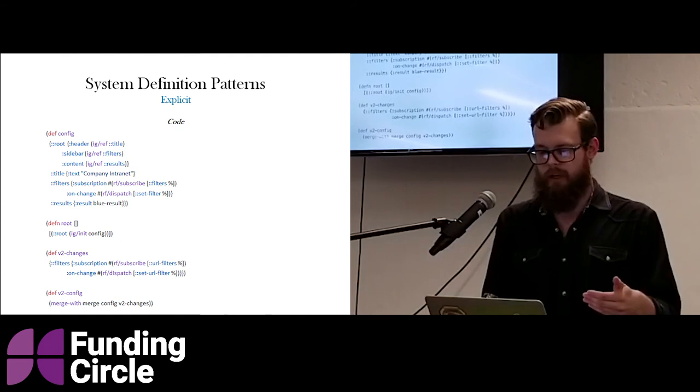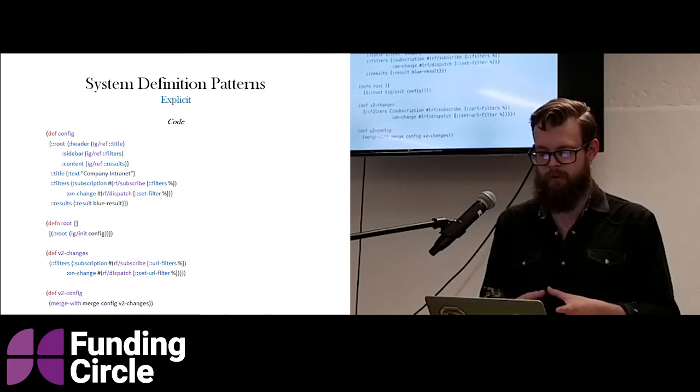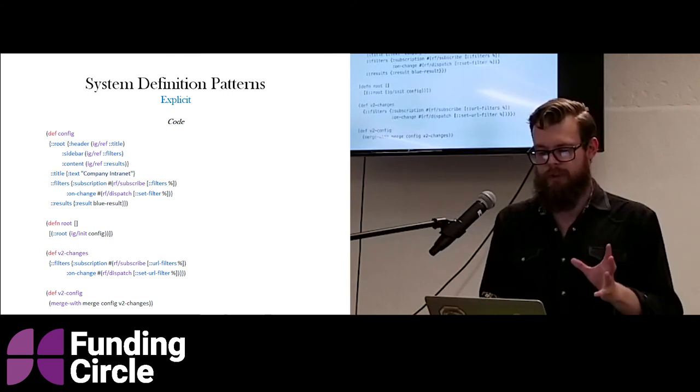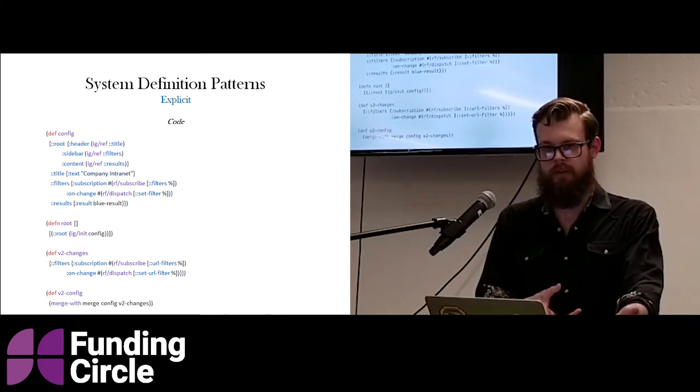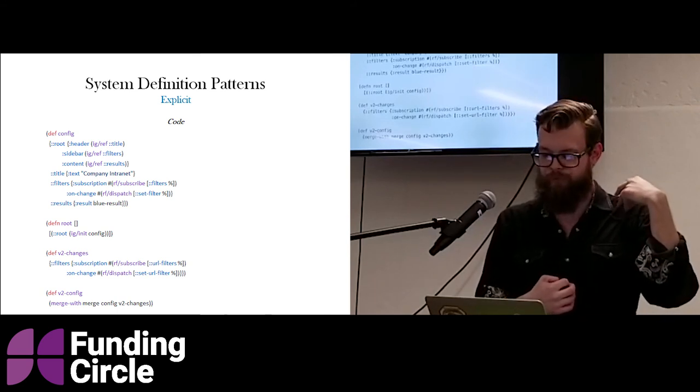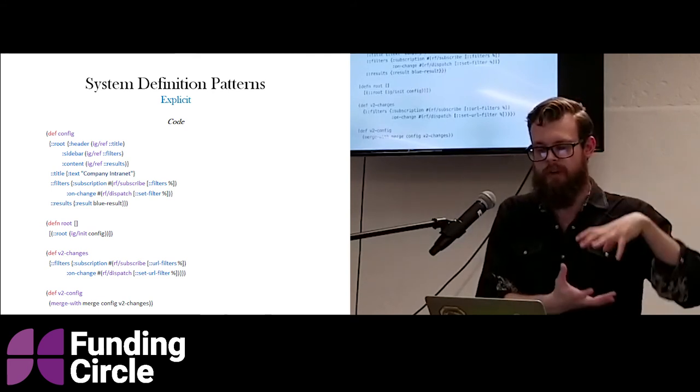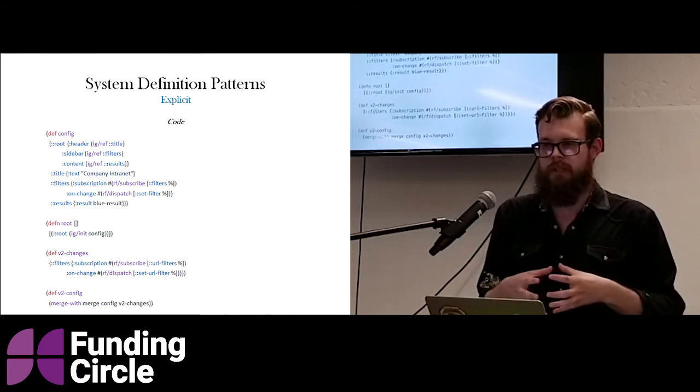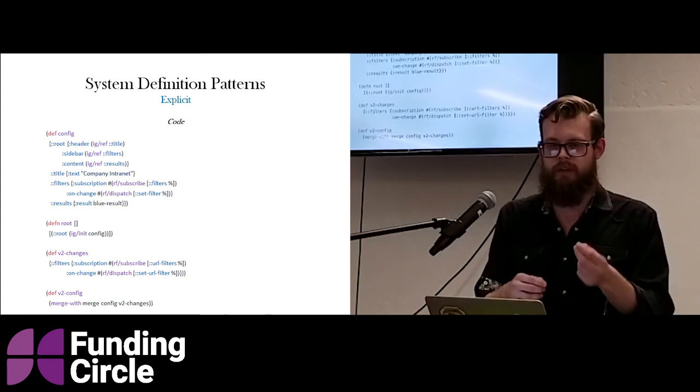Once you switch over to, and the reason I call this implicit, is because you're defining the structure of your system implicitly by just linking things together. An explicit definition is, we've been using integrant, where we have a configuration for the page, and each key in here represents an individual component. So we have the root, the title, the filters, the results, just like the previous slide. But now, if you just look at that first part, the config, the root part has a similar structure, but it's a map instead. And we also have some extra configuration options, like the text of the title.